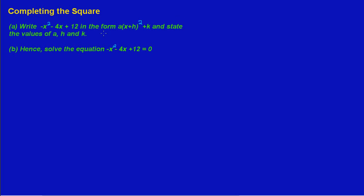In this lesson, we are given a typical exam question where we are asked to write negative x squared minus 4x plus 12 in the form a multiplied by x plus h, all squared plus k, and hence we are asked to state the values of a, h, and k. Let's look at how we would approach part A.